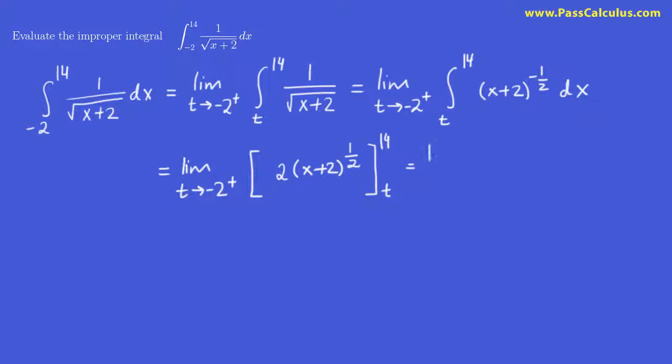Now we're coming along. Why don't we see what this turns out to be? I kind of want to change back to the root symbol. I'll just do that quickly before we evaluate it. So let's evaluate these brackets now. We're going to put in 14 and then subtract off what we get when we put in t.